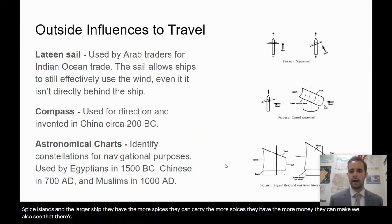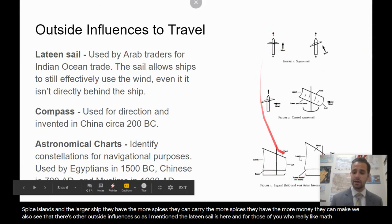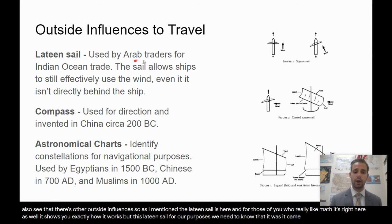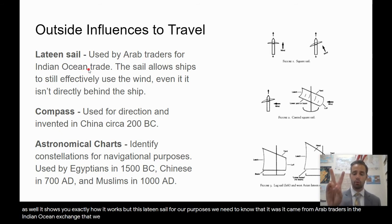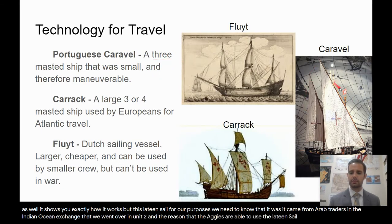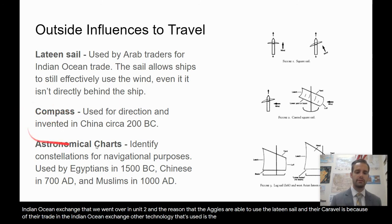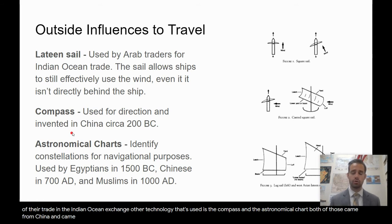There are also outside influences. The lateen sail came from Arab traders in the Indian Ocean Exchange that we covered in unit two. The reason the Portuguese are able to use the lateen sail in their caravel is because of their trade in the Indian Ocean Exchange. Other technology used includes the compass and astronomical charts, both of which came from China and reached Europe through the trade routes we covered in unit two.